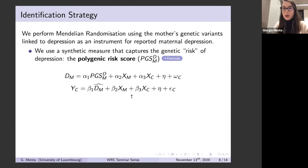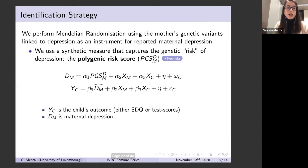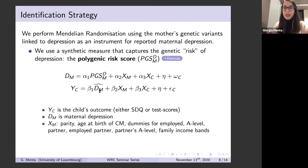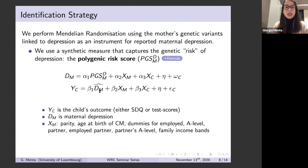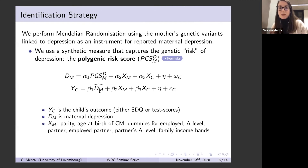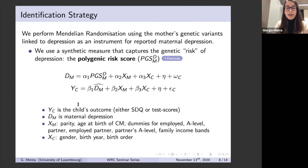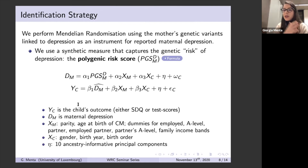The main regression framework consists of a classic first-stage and second-stage regression. The child outcome YC is either total SDQ or one of the test scores. DM is maternal depression. We control for a range of maternal traits — we include as many as we can, though we check that results are not sensitive to these controls, as some may be endogenous. The main reason to include them is to shut down channels of horizontal pleiotropy by controlling for maternal phenotypes partly influenced by her depression genes. We also control for child characteristics and use ancestry-informative principal components to address population stratification.